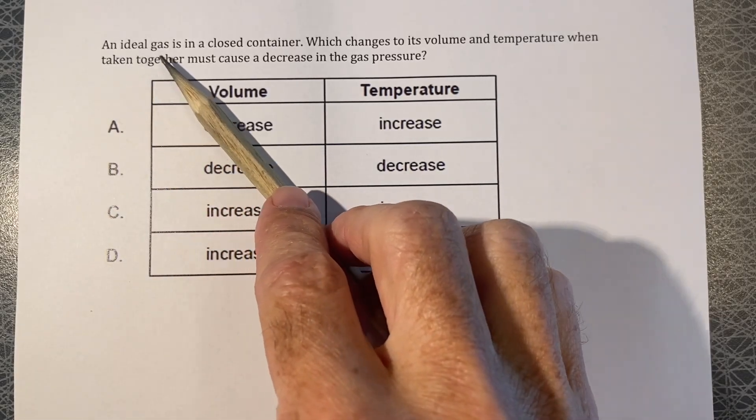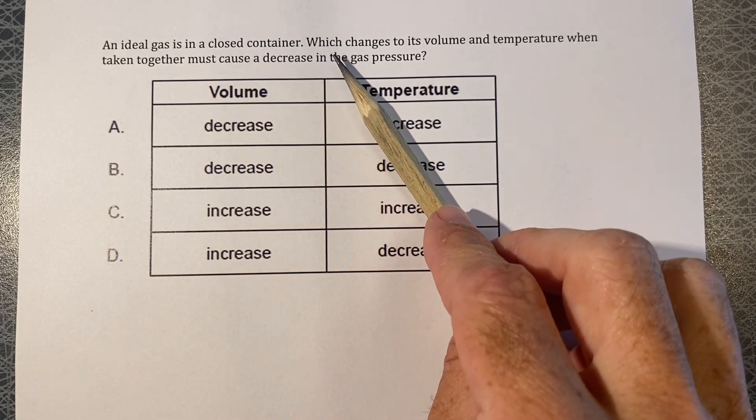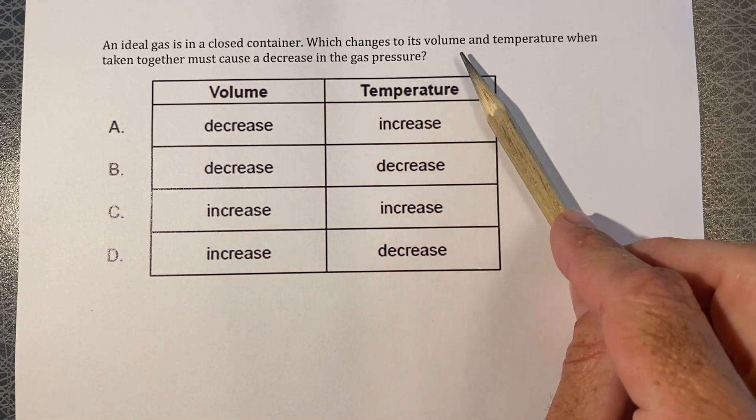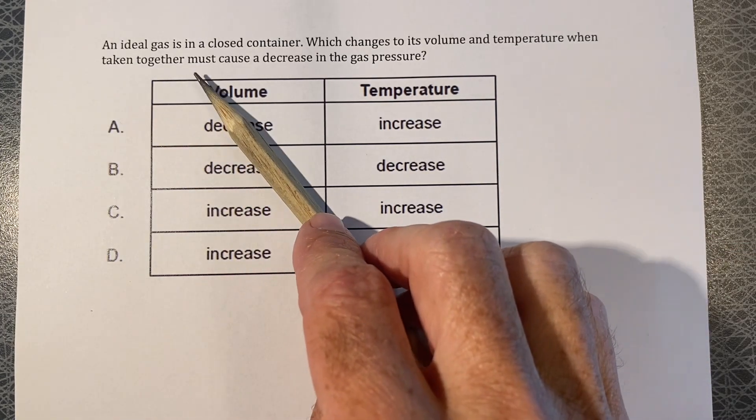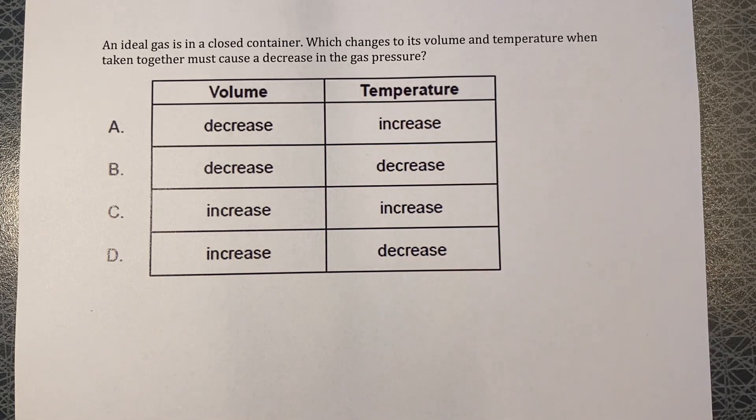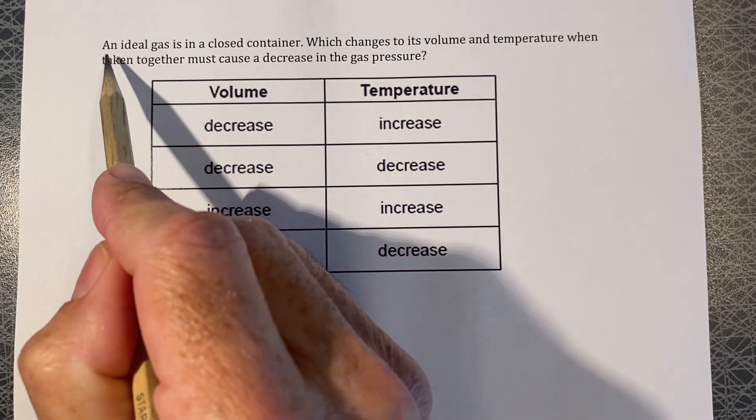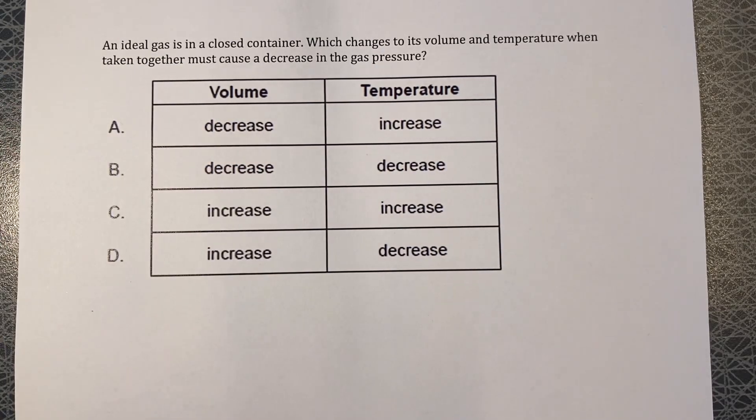An ideal gas is in a closed container. Which changes to its volume and temperature when taken together must cause a decrease in the gas pressure? Okay, it starts with an ideal gas. As soon as you see an ideal gas, you most likely can use the ideal gas law.